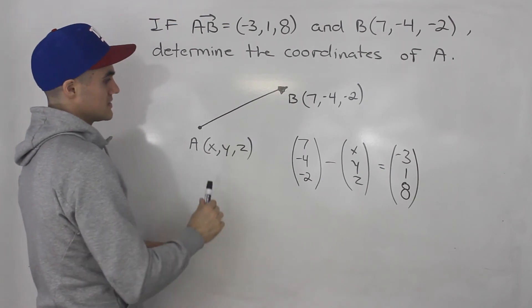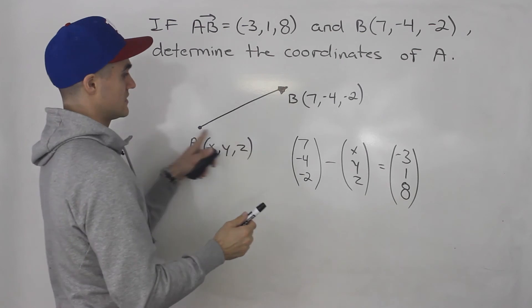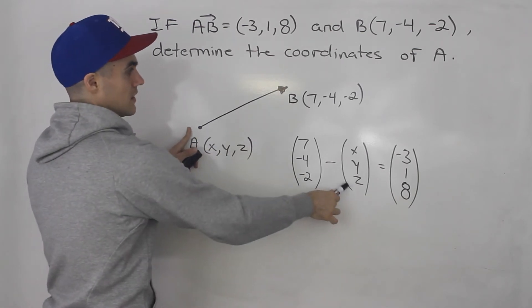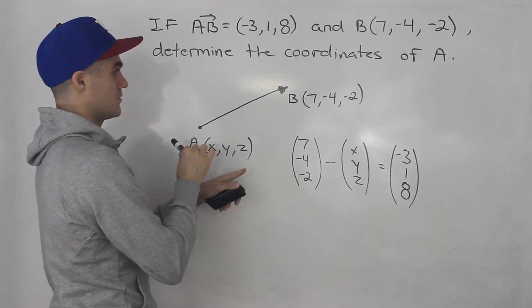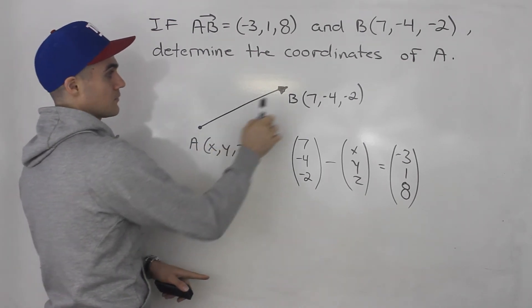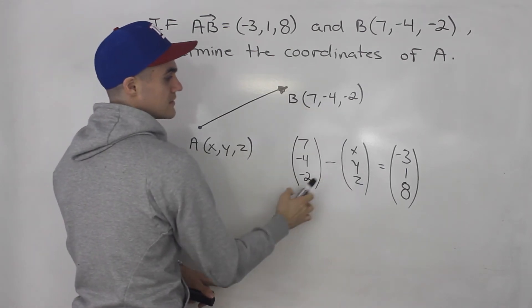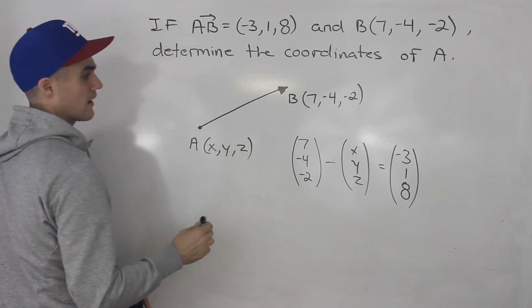Right? And then notice that we're asked to find the coordinates of the tail of this vector, but this could have easily been switched around as well. So we could have gotten coordinates A and had to find coordinates B, and then these two would be switched. All right, so just take note of that.